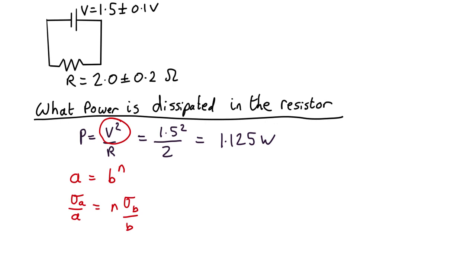Now in this case b is voltage and n is 2. a is v squared so what we're working out is that the uncertainty in v squared divided by v squared is going to be n which is 2 times the uncertainty in v which is 0.1 divided by v 1.5 which comes out as 0.133.